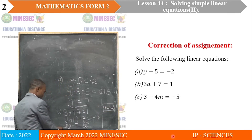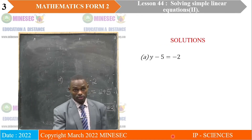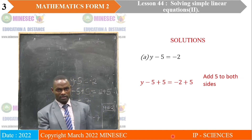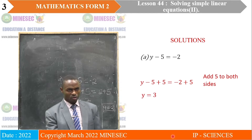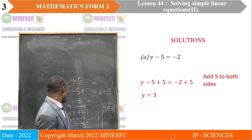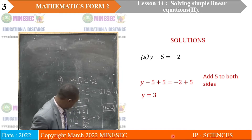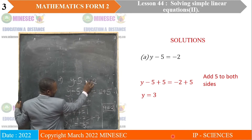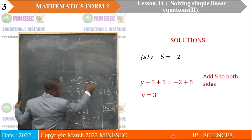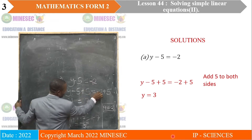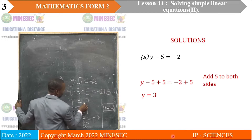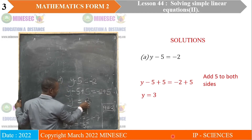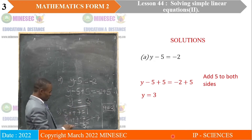Looking at the solution as already explained: adding 5 to both sides, we have Y equals negative 2 plus 5, which is 3. There was an omission — the negative sign was not very clear, but negative 2 plus 5 is 3. That is what was supposed to be there.